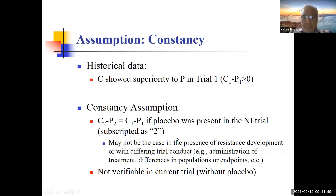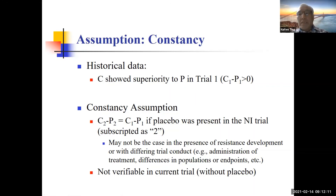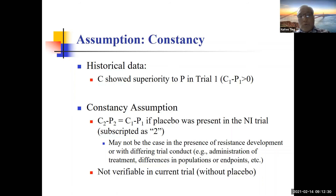Constancy is not verifiable in the current trial without placebo. We want to show the new intervention is superior to placebo, but there is no placebo group, so we use the standard of care as an indirect control to prove the new intervention is superior to placebo. Bio creep is related: if active control C1 is superior to placebo, C2 is non-inferior to C1, and C3 is non-inferior to C2, the difference eventually shrinks, creeping toward the placebo effect.